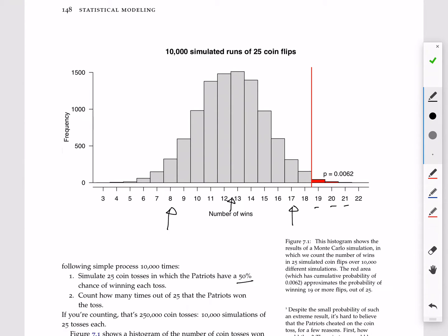The idea is that this probability distribution here is giving you some context for the number 19. We can ask the question, how plausible or how likely is it that the Patriots would have won at least 19 coin tosses out of 25 coin flips? And what you're seeing in this histogram provides the answer.